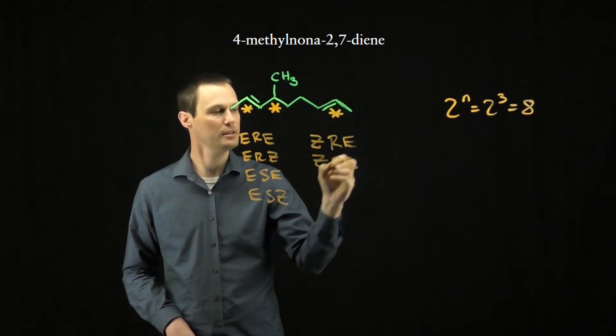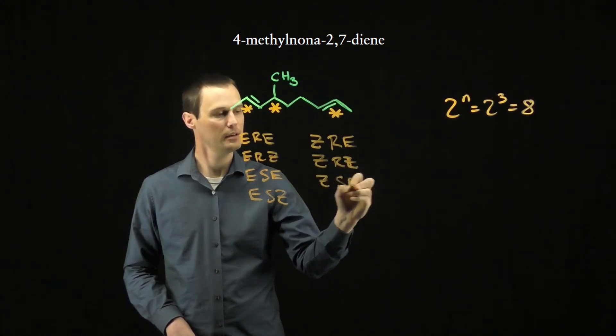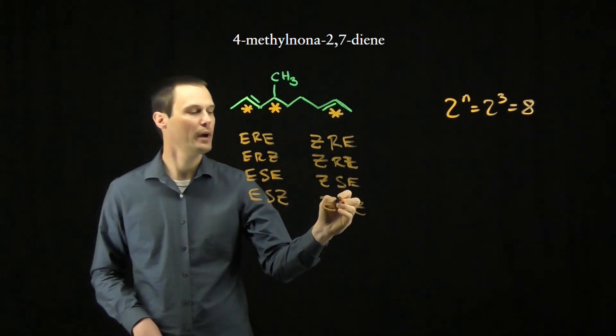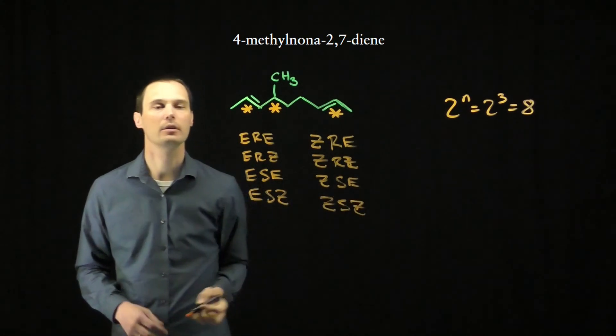ZRE, ZRZ, ZSE, and ZSZ. These are the eight possible stereoisomers for this particular molecule.